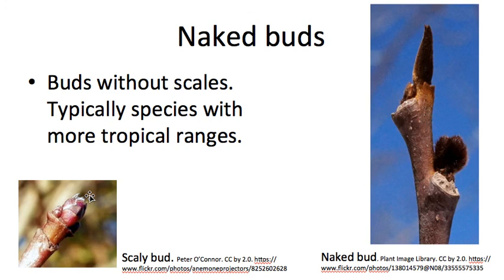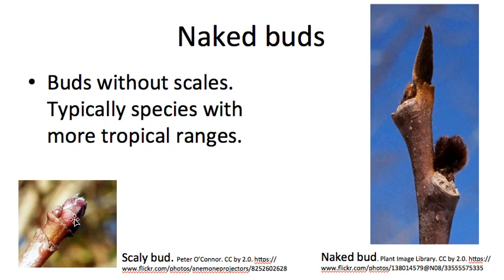The next trait that may come up in your key is naked buds. We said in the lecture that there are typically scales — protective coverings around the young leaves. Scales occur mostly in temperate or dry areas, but in moist tropical areas they're not really necessary. On the right here we see a naked bud: this is the immature leaf with no protective covering over it — they often look kind of hairy like this. Over here we have a typical scaly bud, and you can see the bud scales.